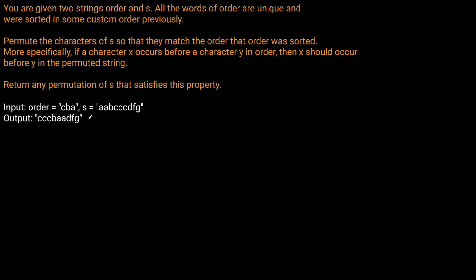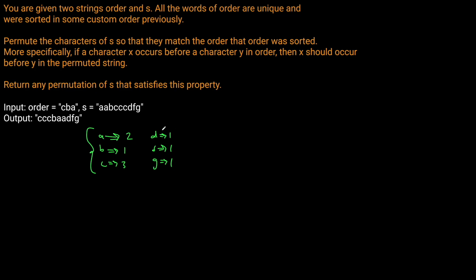The way we want to solve this problem is we want to maintain a dictionary of the counts for each character. So in our S, we're going to have A with two characters, B with one count, C with three counts, D with one count, F with one count, and G with one count. Once we've built this dictionary, we then iterate over ORDER and build our string as we go.